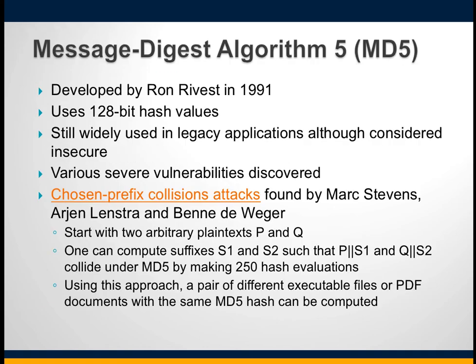Regarding specific algorithms: in 1991, Rivest released a version of his message digest algorithm called MD5. It processes 512-bit blocks of the message and uses four distinct rounds of computation to produce a digest of the same length as the original algorithms. MD5 has padding requirements similar to those seen earlier in block ciphers, and it implements an additional security feature that reduces the speed of digest production. However, recent cryptanalytic attacks demonstrated that MD5 is subject to collisions, preventing its use for ensuring message integrity.